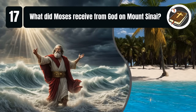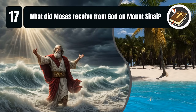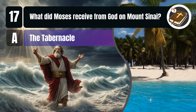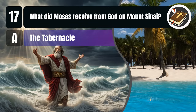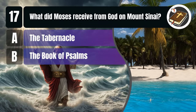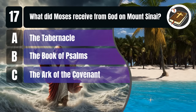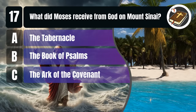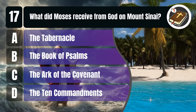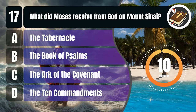Question 17. What did Moses receive from God on Mount Sinai? A. The Tabernacle, B. The Book of Psalms, C. The Ark of the Covenant, D. The Ten Commandments. You get 10 seconds.